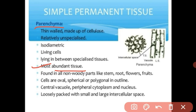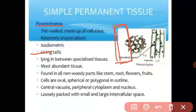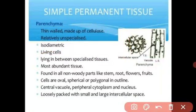The shape of parenchyma is oval, spherical, or polygonal. Parenchyma has a thin cell wall and is a living cell. It is isometric, meaning equal diameter. It is the most abundant tissue, present in most parts of the plant — specifically in the soft non-woody parts.